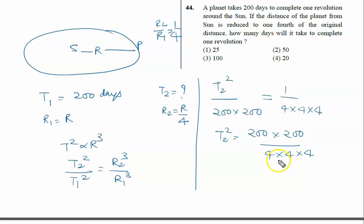Now further we will calculate T2 square equal to 200 square, and this is 4, 4 of 16, 16 to 64, so 8 square.